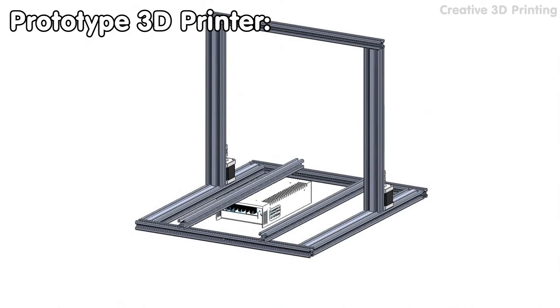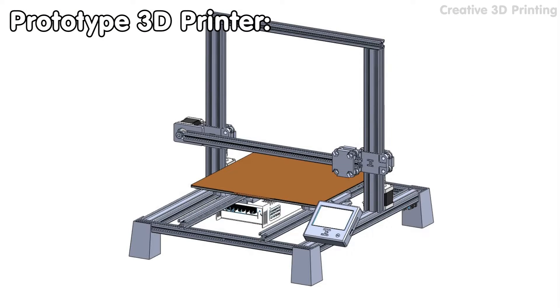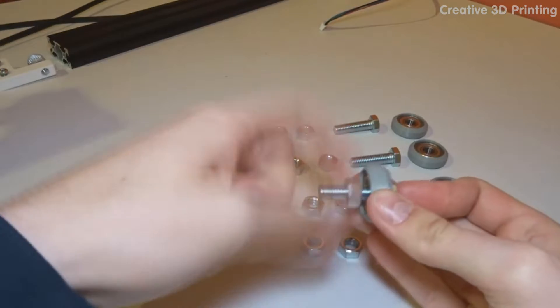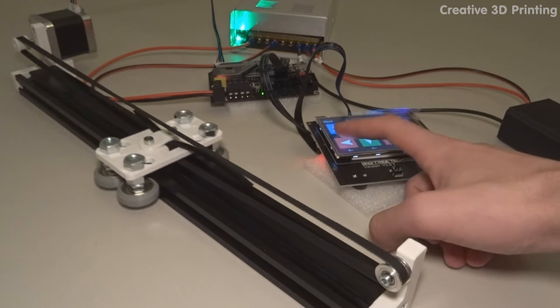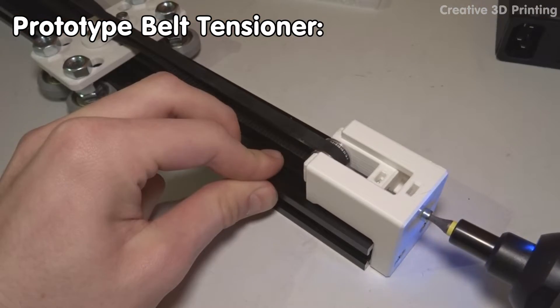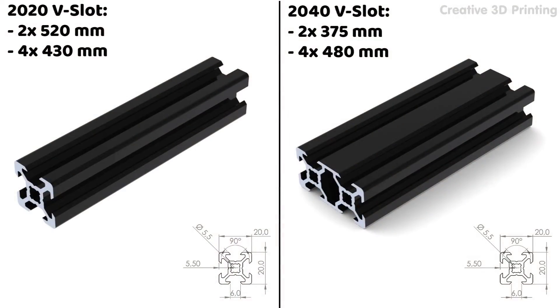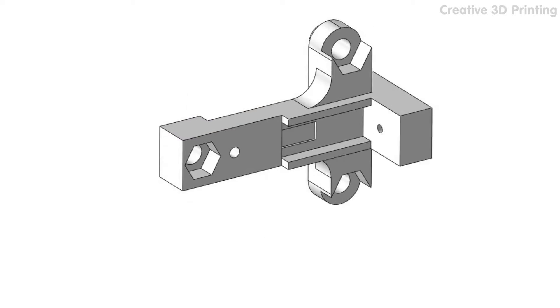I started by designing the frame and the carriage that can move smoothly over the aluminum profiles, which will allow the x, y and z movements. Once the prototype had been tested and the dimensions were correct, I ordered the custom aluminum profiles and continued refining the printed parts.